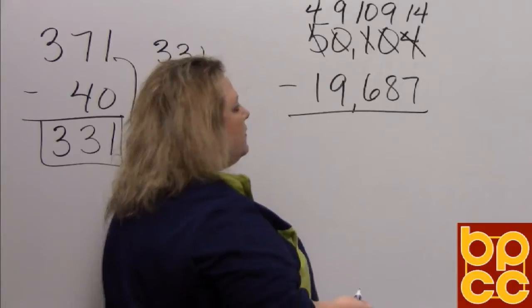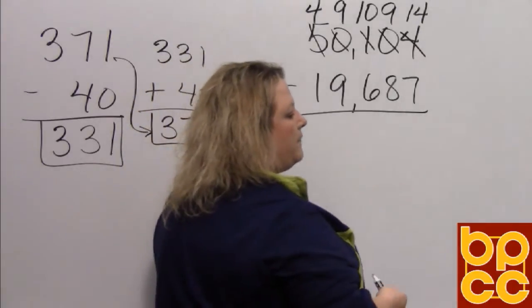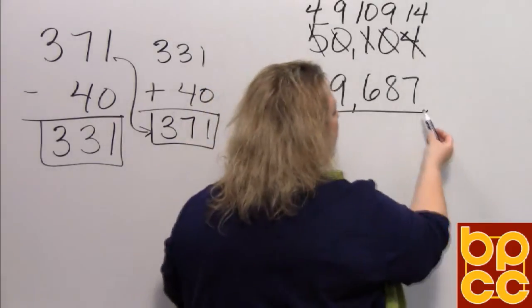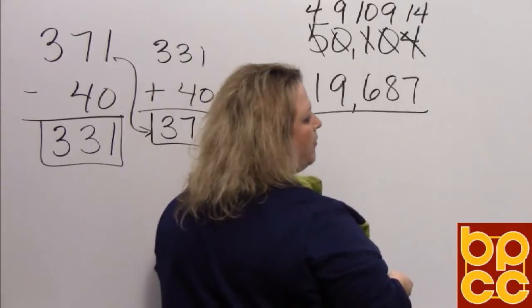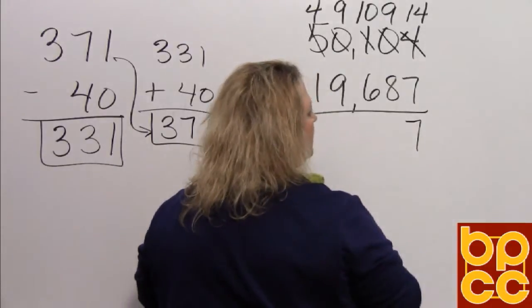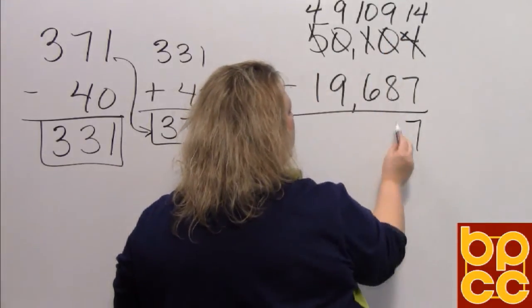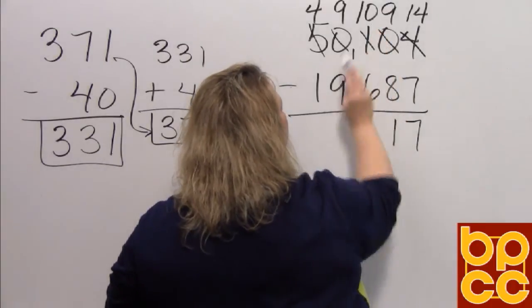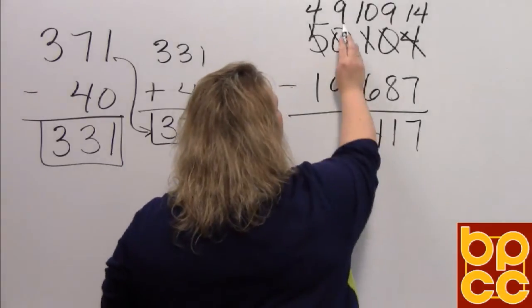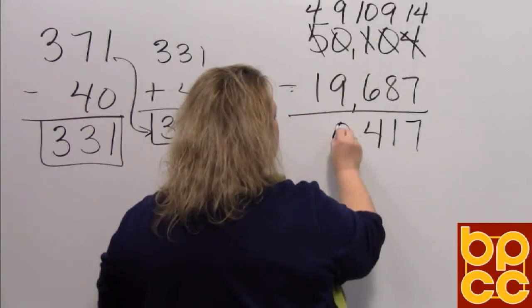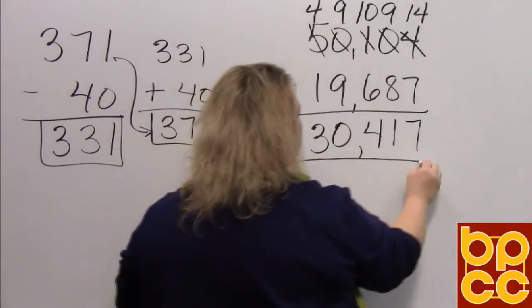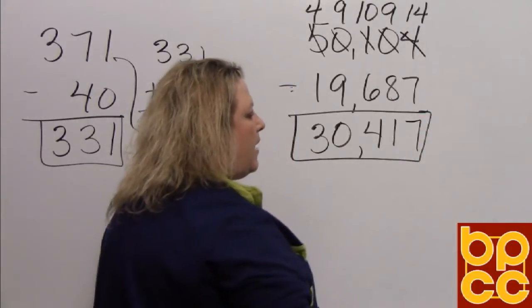Anytime you have to do borrowing, if the bigger number is on the bottom and the smaller number is on the top, you have to borrow so that you can do the subtraction. Because you cannot take a bigger number from a smaller number. So you have 14 and we're going to take away 7 and that leaves us 7. We're taking 9, take away 8 and that leaves me 1. We have 10 and we're taking away 6, that leaves me 4. I have 9, I'm taking away all 9, that leaves me 0. I have 4 and I'm taking away 1 and that leaves me 3. So this is the answer, 30,417 that I believe is correct.